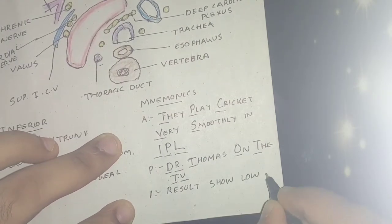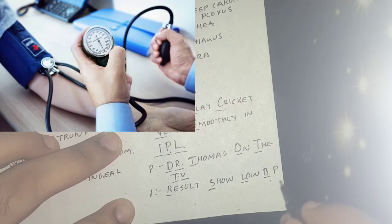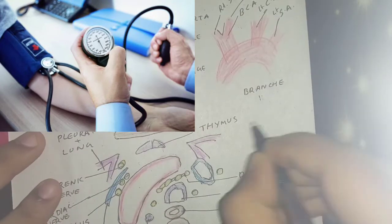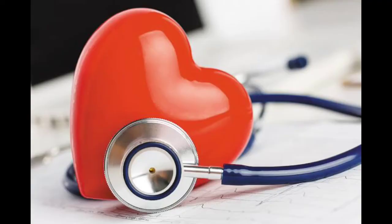For the inferior relation, that is the result to show low blood pressure. R for recurrent laryngeal nerve, S for superficial cardiac plexus, L for ligamentum arteriosum, B for bronchus, and P for pulmonary trunk. The superior relation is same as that of the branches. That's all for the topic arch of aorta.